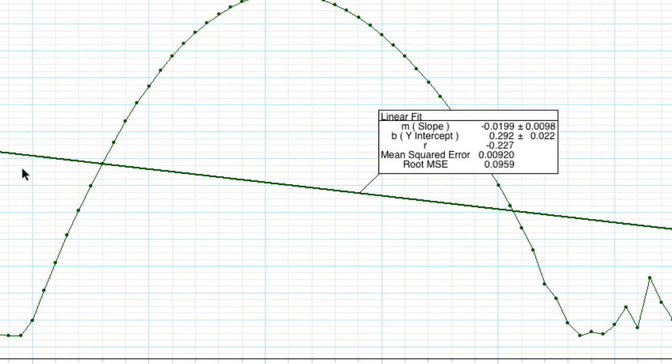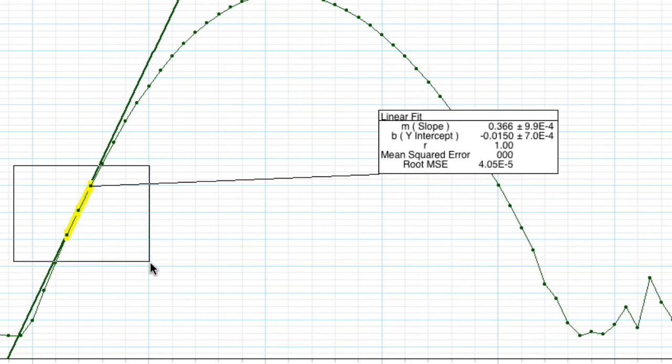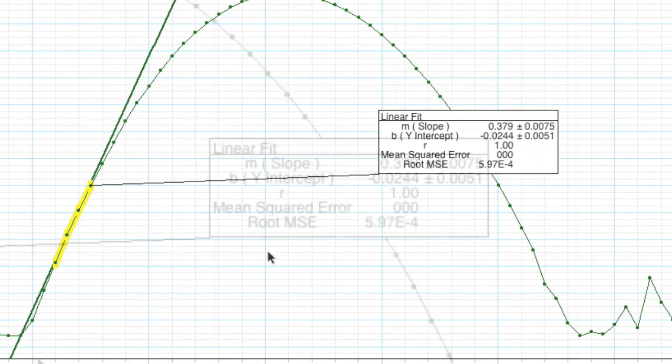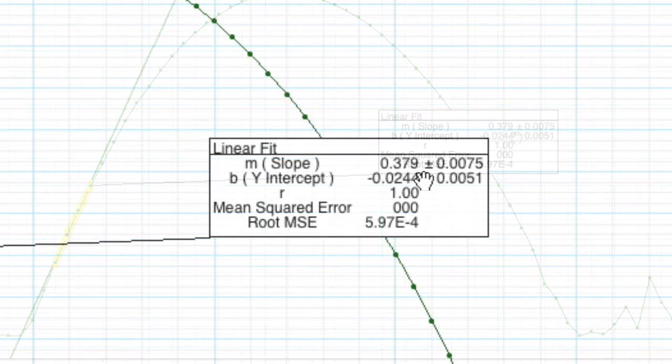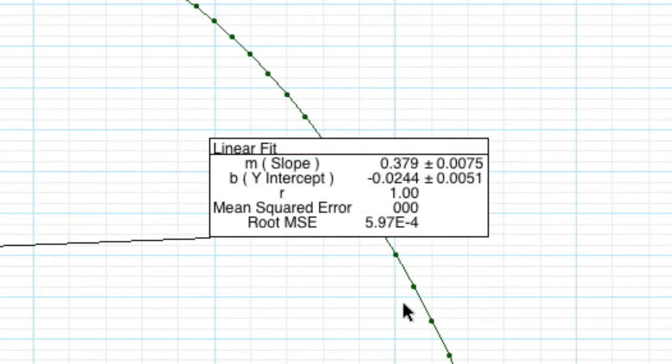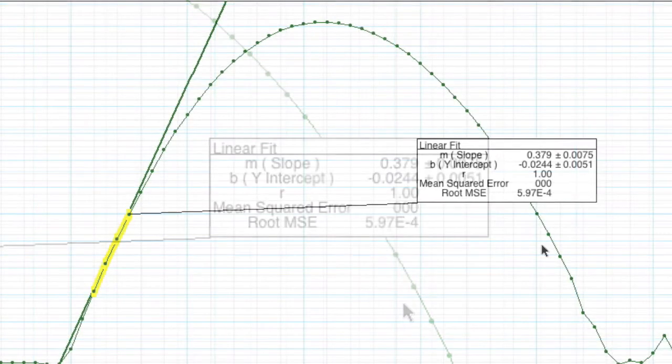So what I'm going to do is just apply a tangent line right here at the beginning of the motion right when I push the cart. And if we look really closely we can see that the slope equals 0.379, so that's 0.379 meters per second.